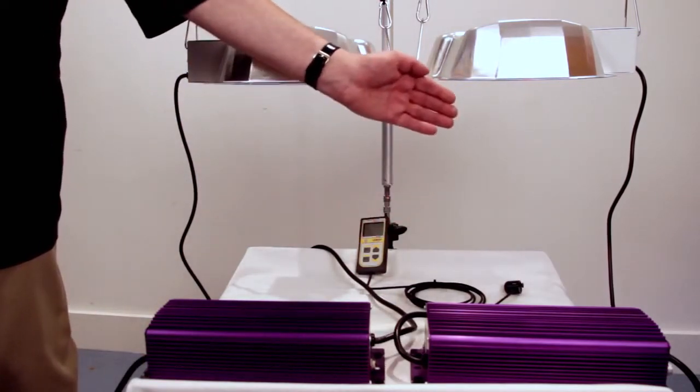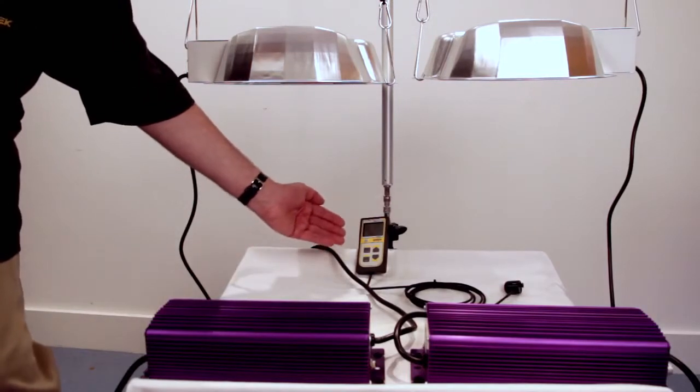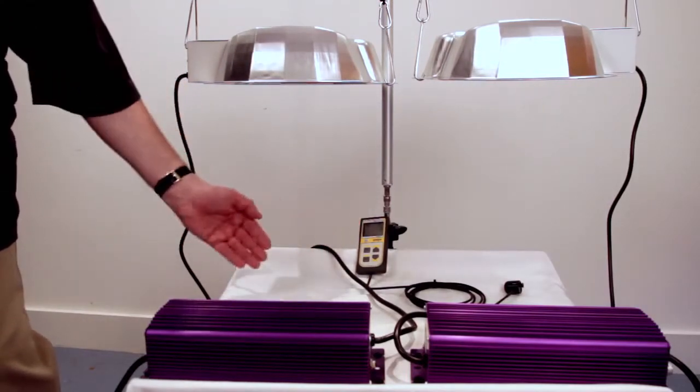We're going to be using a micromolometer to measure the difference in PAR output for each lamp. PAR being photosynthetic active radiation and refers to the actual part of the light spectrum that plants use for photosynthesis.